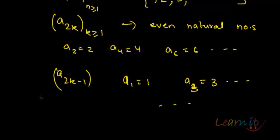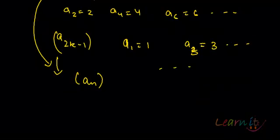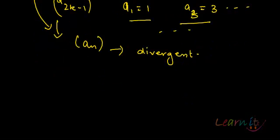Both of these are subsequences of the same sequence a_n, and both will not converge to the same limit — they are leading towards different limits, since one is even and the other is odd. Hence this sequence is divergent. Also, because they are not bounded, that's another reason.